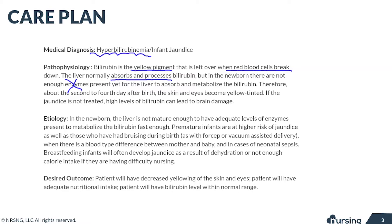As the bilirubin builds up in the body and you get increased levels, you're going to see that in the skin and the eyes of the newborn — the eyes and skin become yellow tinted. It's really important to know that if we don't detect it and if it's left untreated, really high levels of this can cause brain damage.